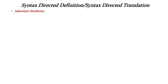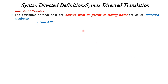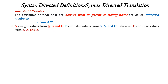Now let us see about inherited attributes. The attributes of a node that are derived from its parent or sibling nodes are called inherited attributes. Consider the production S tends to ABC, where A, B, C are child nodes and S is the parent. If we consider A, it can get values from its siblings B or C or its parent S. If we consider B, it can get its value from A, C, or S. If we check C, it can get values from siblings A, B, or its parent S.